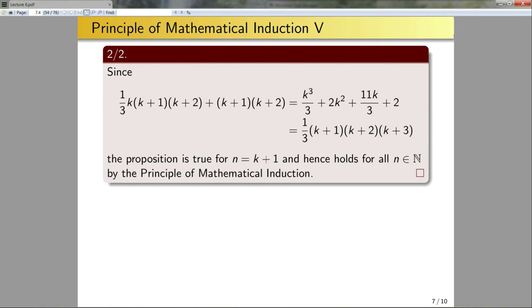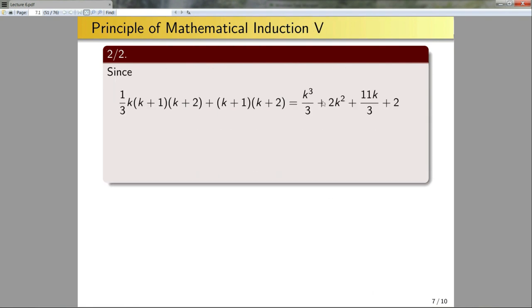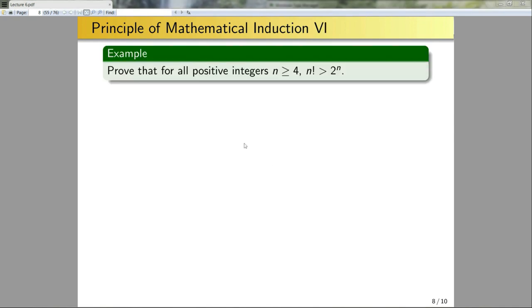One comment on the formal proof: if you formally wanted to, you could jump directly from the inductive hypothesis equality to the final equality — I just split it up so it would fit on slides. Okay, let's give one more example of the principle of mathematical induction. Prove that for all positive integers n≥4, n factorial is greater than 2 to the n.